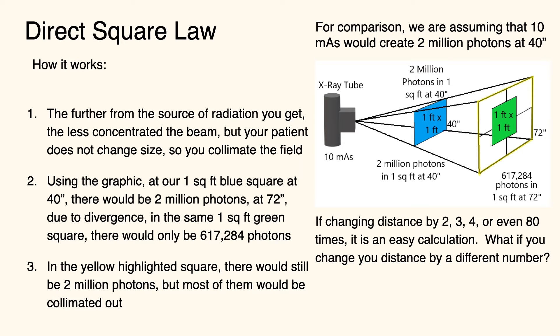If you're changing distances by two, three, four, or even 80 times, it's pretty easy calculation. You just square the distance that you're multiplying it by and then multiply or divide your mAs. For those other distances, that's where the direct square law comes in.